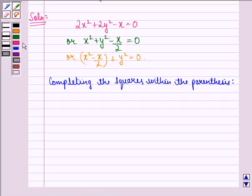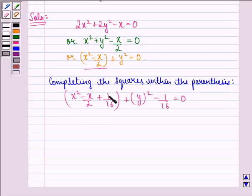we get x² - x/2 + 1/16 + y² - 1/16. We see that y² is itself a complete square; now we need to make x² - x/2 a complete square. For this, we add 1/16 and subtract 1/16.